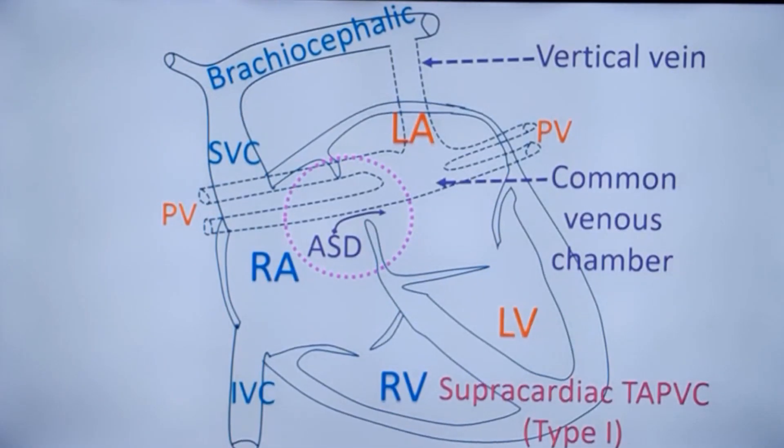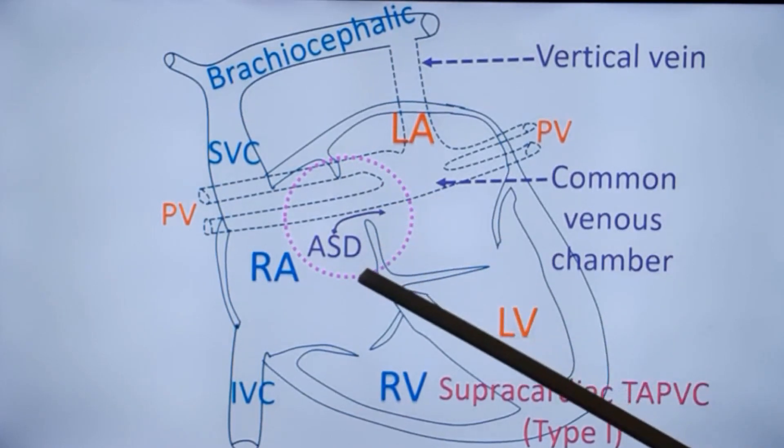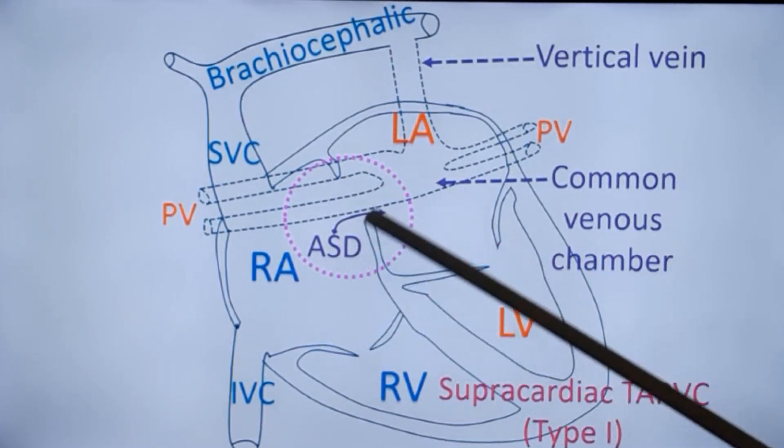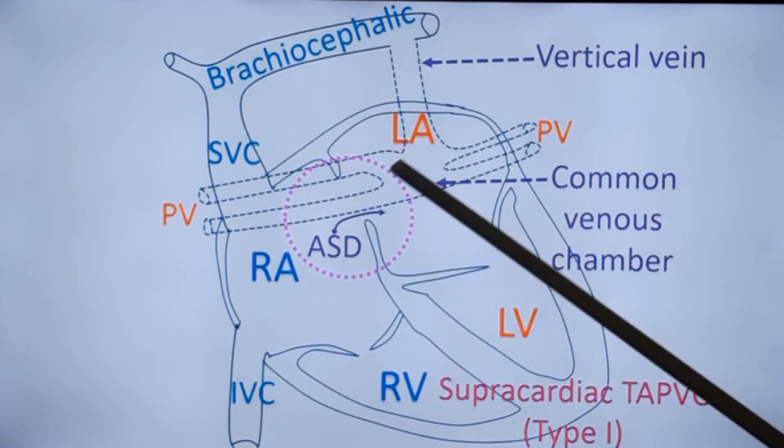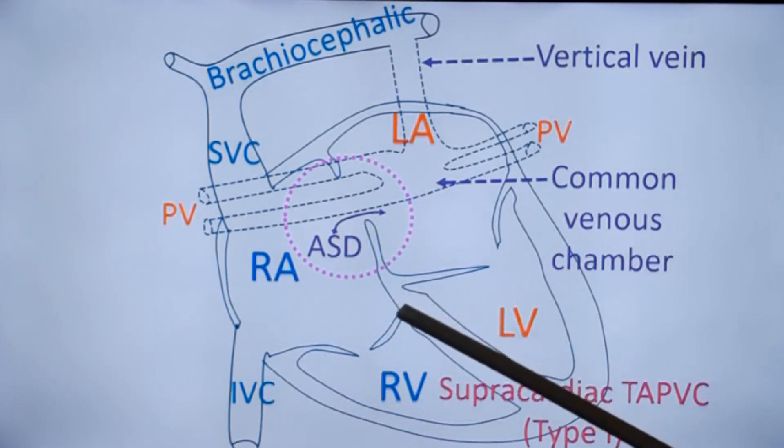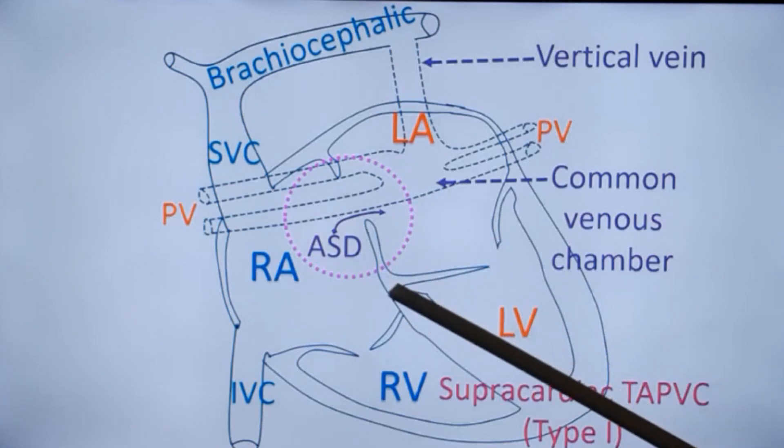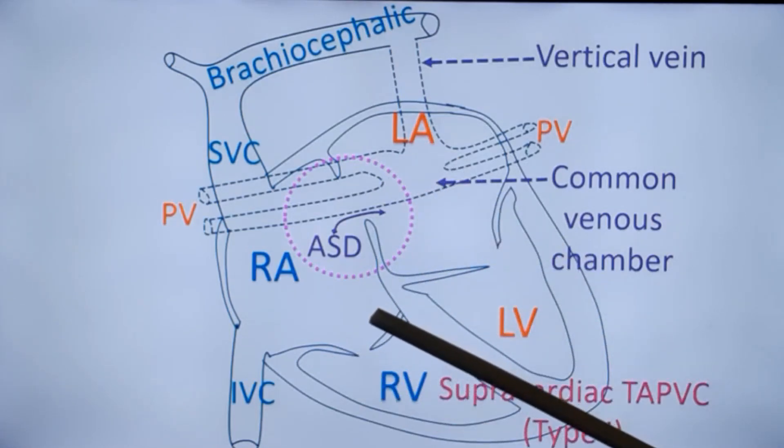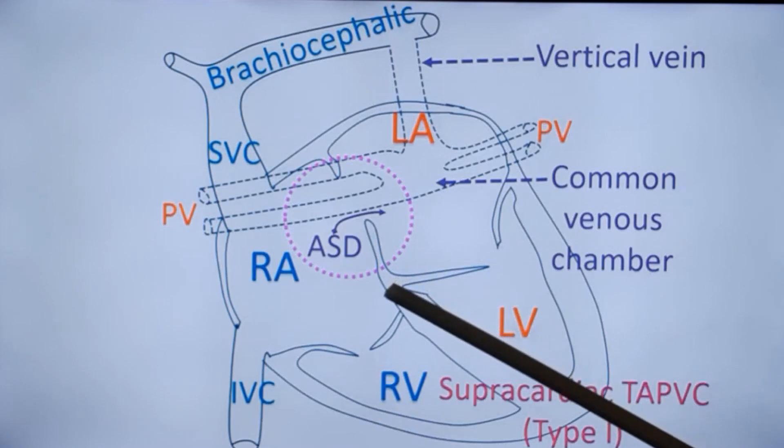In Total Anomalous Pulmonary Venous Connection, an atrial septal defect is mandatory for survival. This atrial septal defect will shunt both ways. So there is good mixing between the two atria, which is necessary for survival. If the size of the ASD is small, there will be difficulty in survival because of severe cyanosis.